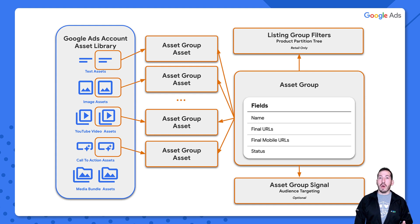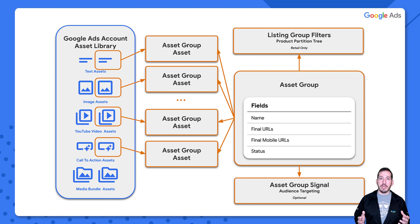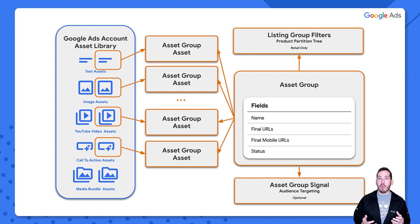We also have some fields on the asset group itself, including its name, the final URLs, and mobile URLs we want to target, as well as the asset group status. This is a great visual representation of the asset group and all its related components as we'll create them in the Google Ads API. All of these entities, with the exception of asset creation, will be included in the bulk mutate request that we create. As a result, we need to use temporary IDs for referring to all these different objects, and I've provided arrows to show how we'll use those temporary IDs.